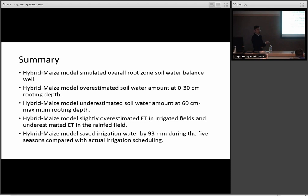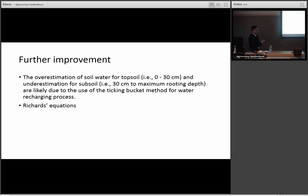In summary of these two studies about water, what we found is the hybrid-maize model can simulate well on total rooting depth for soil water balance. It overestimates water balance for the top 30 centimeters but underestimates water balance from 60 centimeters to rooting depth. For the ET part, we slightly overestimate ET in irrigated fields and underestimate in rainfed fields. We found out the hybrid model saved irrigation water by 93 millimeters during five seasons compared with actual irrigation schedule. But still I haven't answered why we overestimate top 30 centimeters soil water but underestimate below top 30. So it turns out the reason could be we use this tipping bucket method for the water recharging process. What happens in tipping bucket is when you have water input either from rainfall or irrigation, water starts recharging. In the program, it fills out the top 30 centimeters.